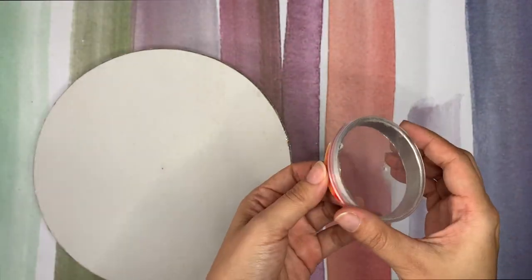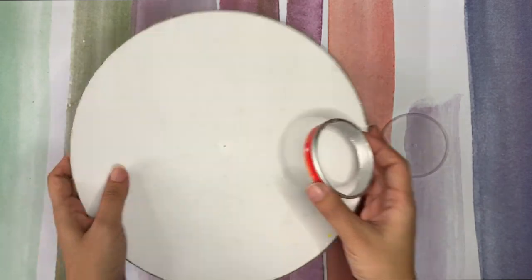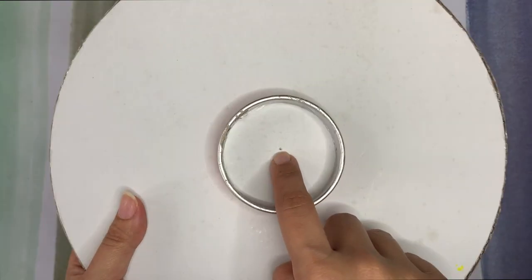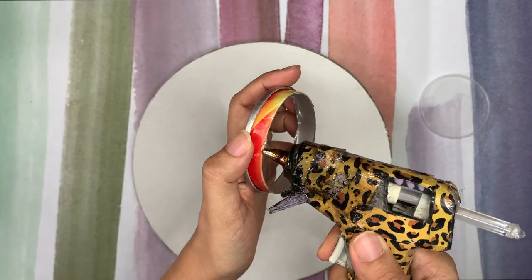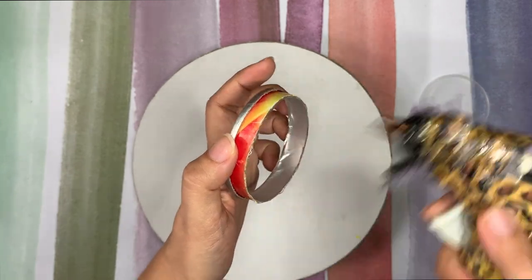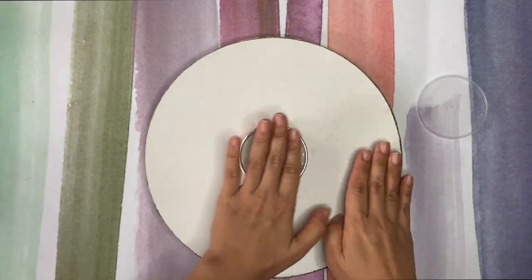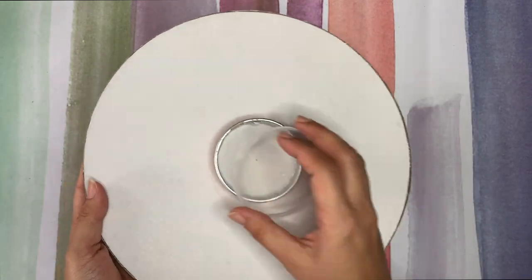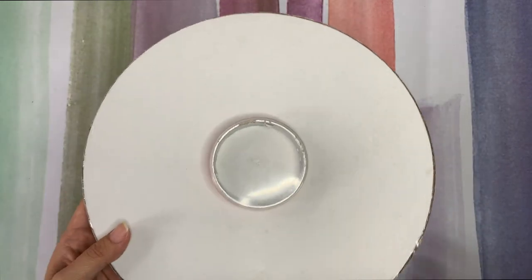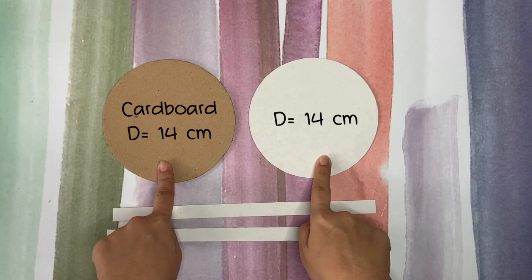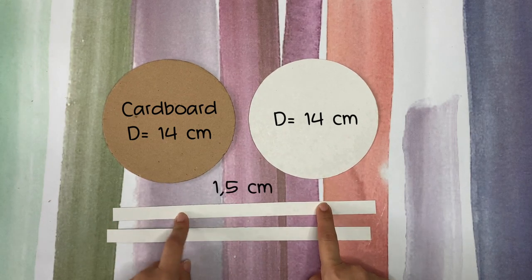And let's get the Pringles container apart and put it right in the middle. And let's get to the last part of the table, the rolling part.